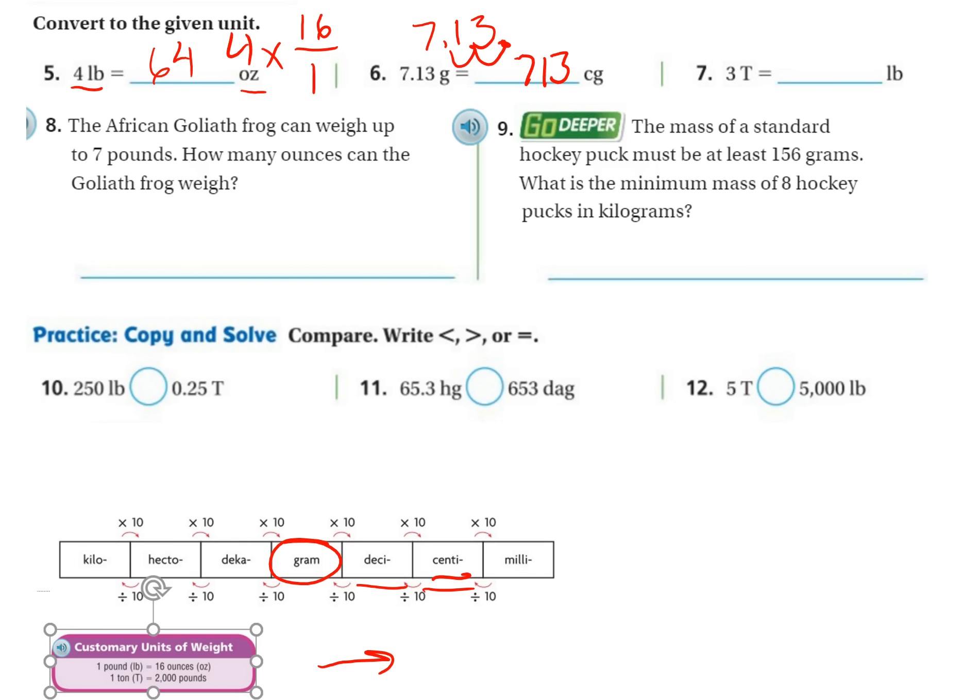Three tons to pounds. So I want pounds on top, and right down here it tells us 2,000 pounds is one ton. Since I'm going from tons and I want pounds, pounds goes on top. 2,000 pounds is one ton, and I need to multiply that by three. So three times 2,000 is 6,000. There's my answer. Done, nice and easy with these charts. 6,000.